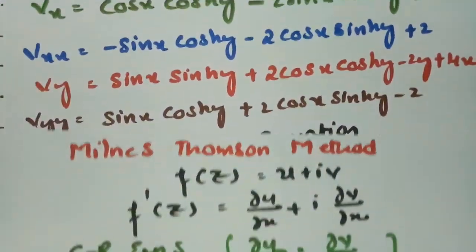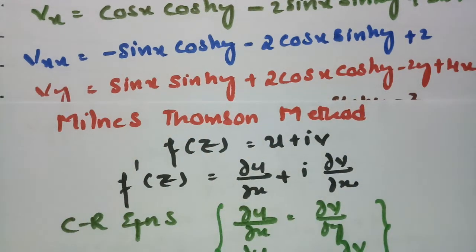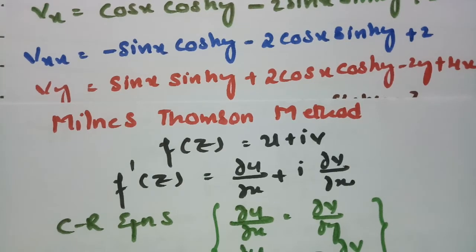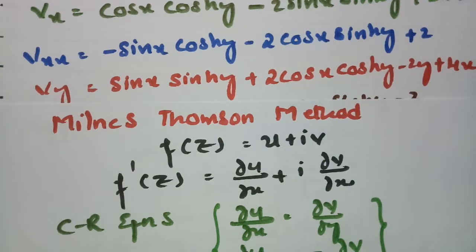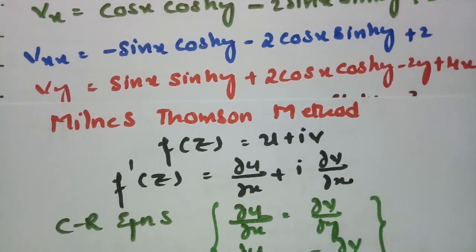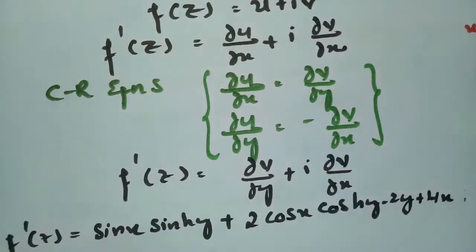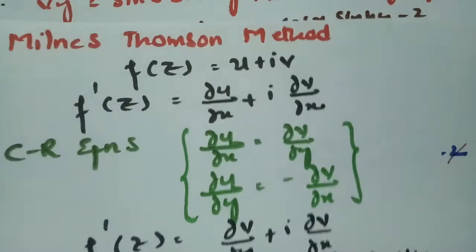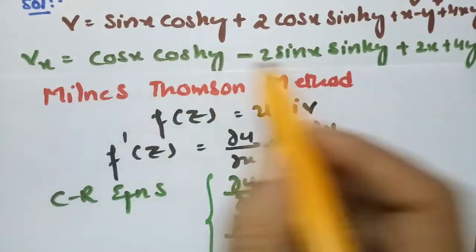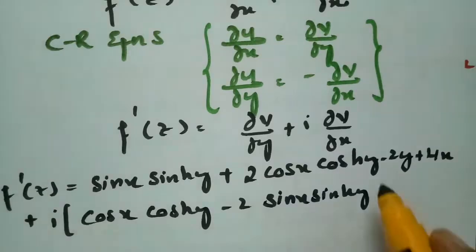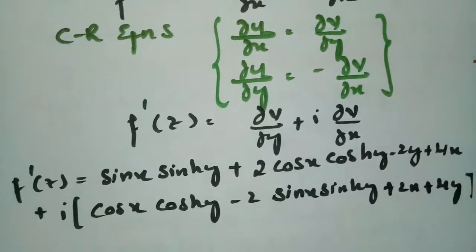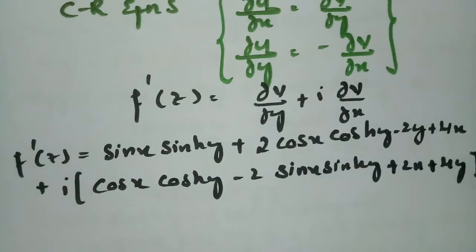So f'(z) equals dv/dy plus i times dv/dx. I have both values ready. dv/dy is sin(x)sinh(y) plus 2cos(x)cosh(y) minus 2y plus 4x, and plus i times dv/dx which is cos(x)cosh(y) minus 2sin(x)sinh(y) plus 2x plus 4y.